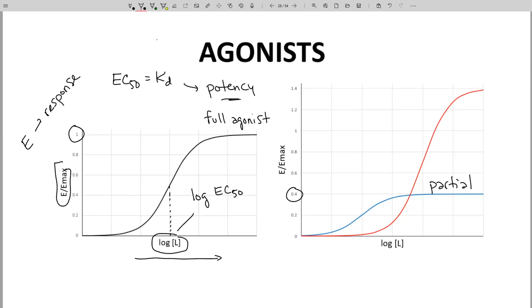Partial agonists can be really weak or almost as strong as a full agonist. The potency of a partial agonist is still called an EC50 and is measured at the inflection point, which will be one half of the partial agonist maximum response, about 0.2 for this example. The potency is still called an EC50. In this case, it's logarithmic, so it's log EC50.